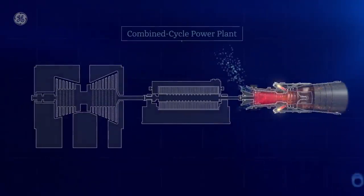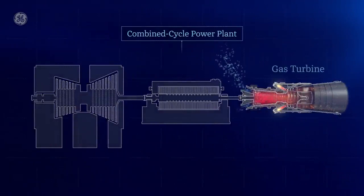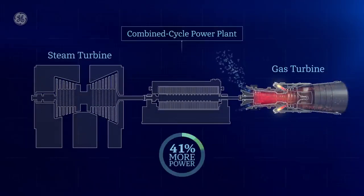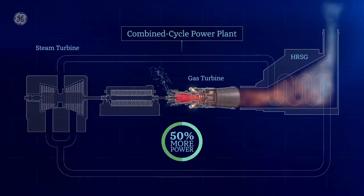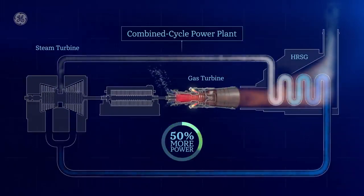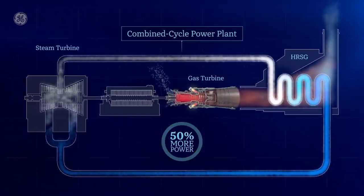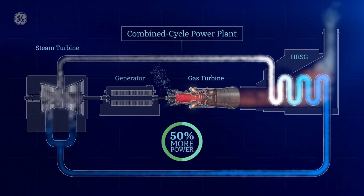In what's called a combined cycle power plant, the gas turbine can be used in combination with a steam turbine to generate 50% more power. The hot exhaust generated from the gas turbine is used to create steam in a boiler, which then spins the steam turbine blades with their own drive shaft that turns the generator.